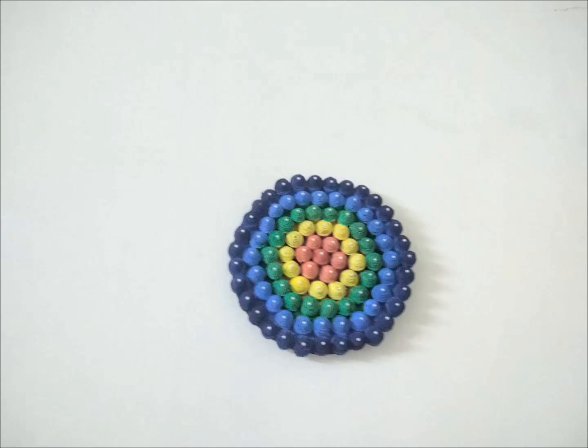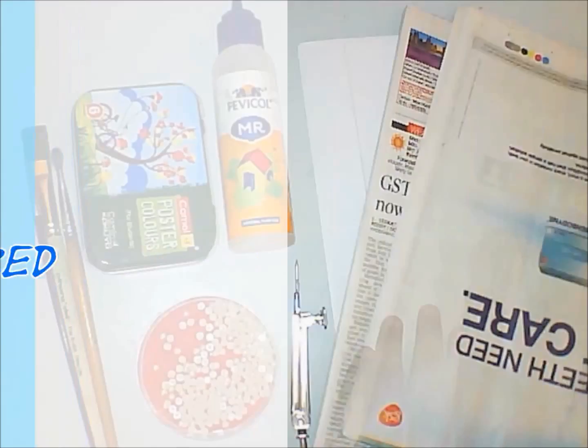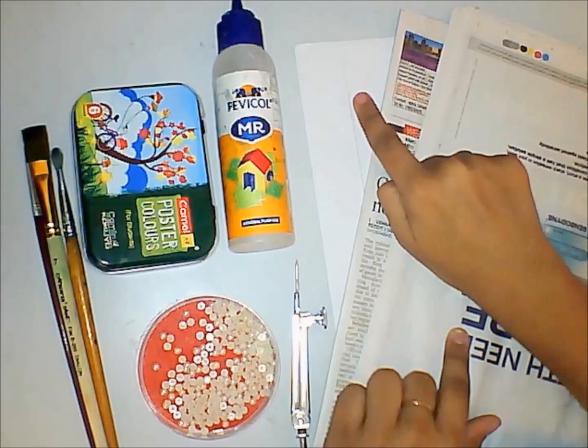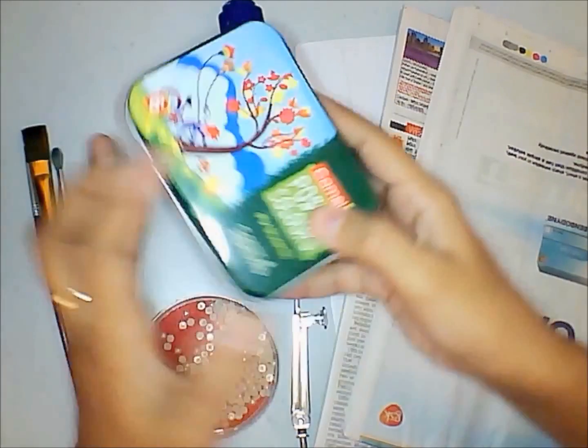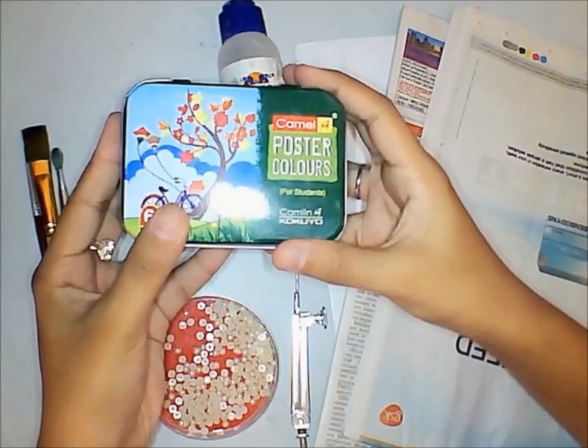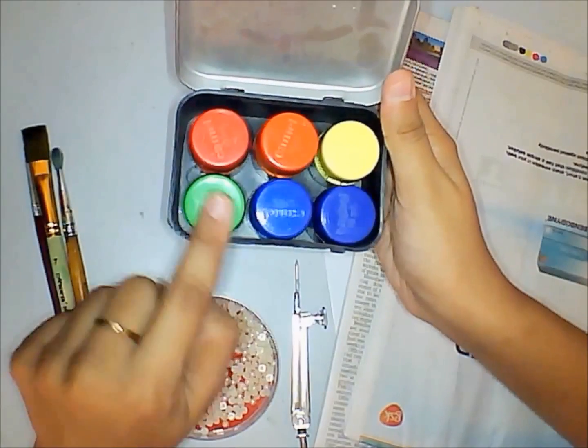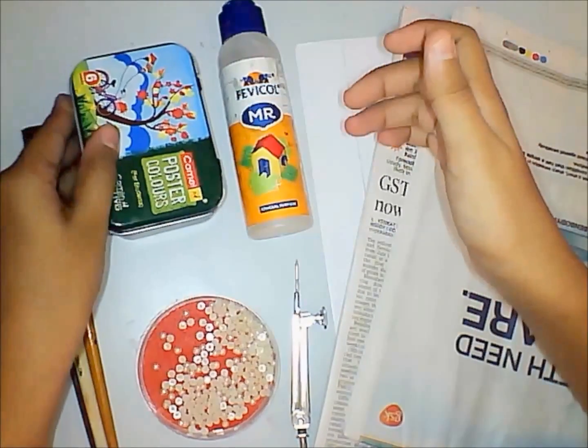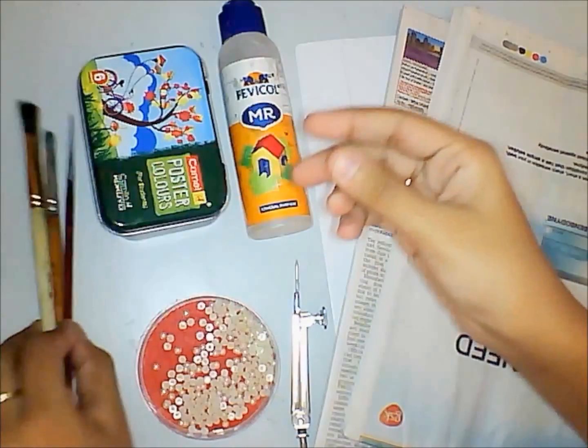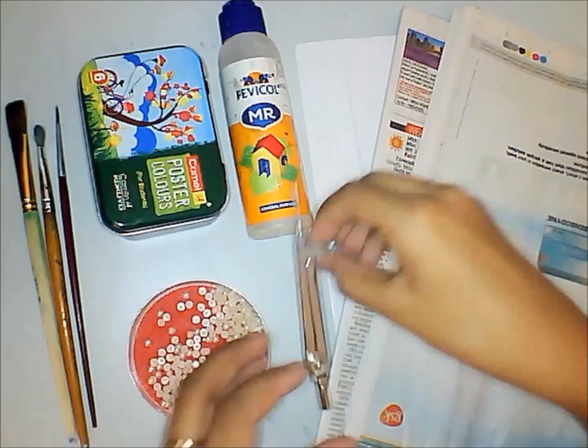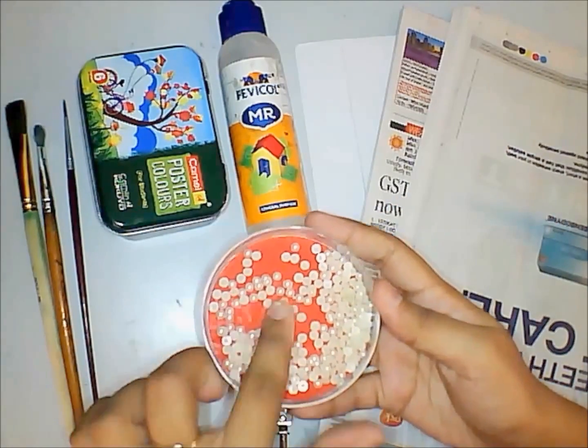This is the beautiful wall deco video that we're going to make this week. Let's have a look at the things required. We need old newspapers, thick cardboard, and glue. I'm using Fevicol MR, Camel poster colors in different shades of red, orange, yellow, green, blue, and violet. I'm also using paintbrushes of different sizes, a compass, and some white beads for decoration.